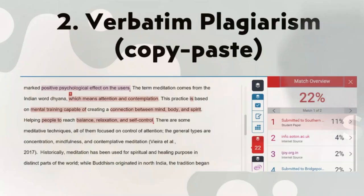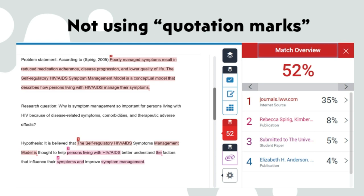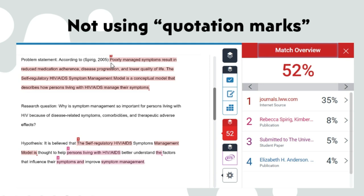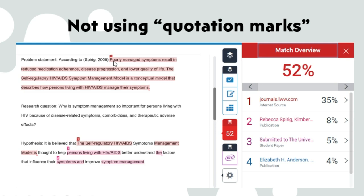Another type of plagiarism is when students cite the source, however, the student forgets to enter the quotation marks. As we see in this example, the student slightly makes a reference to the source, but does not use quotation marks. Instead, the student takes word for word the information that appears in the original source and pastes it in his or her paper. And that is, again, plagiarism. To avoid plagiarism, the student should have paraphrased, said it in his or her own words, and also cited the source.